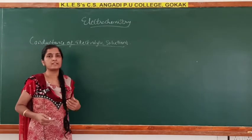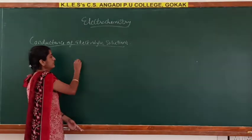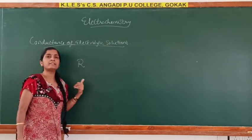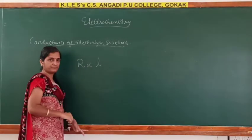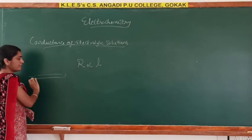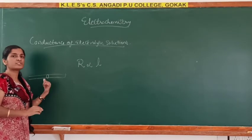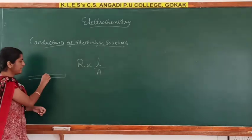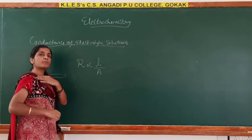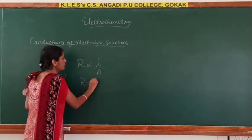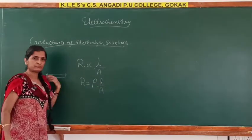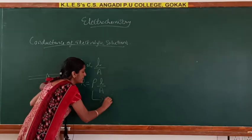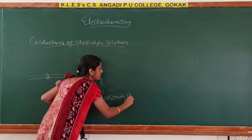The conductance of electrolytic solutions is very similar to that of a solid conductor. Before discussing conductance, we first discuss resistance. The resistance of a current-carrying conductor is directly proportional to its length and inversely proportional to its area of cross section. So R equals rho times L divided by A, where R is resistance, L is length, and A is area of cross section.